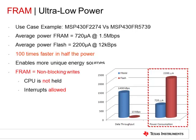Now let's compare flash and FRAM devices executing at the same clock speed but each writing to non-volatile memory at high speed. The FRAM device writes at greater than 1 MB per second while the flash device writes at about its maximum speed of 13 KB per second.